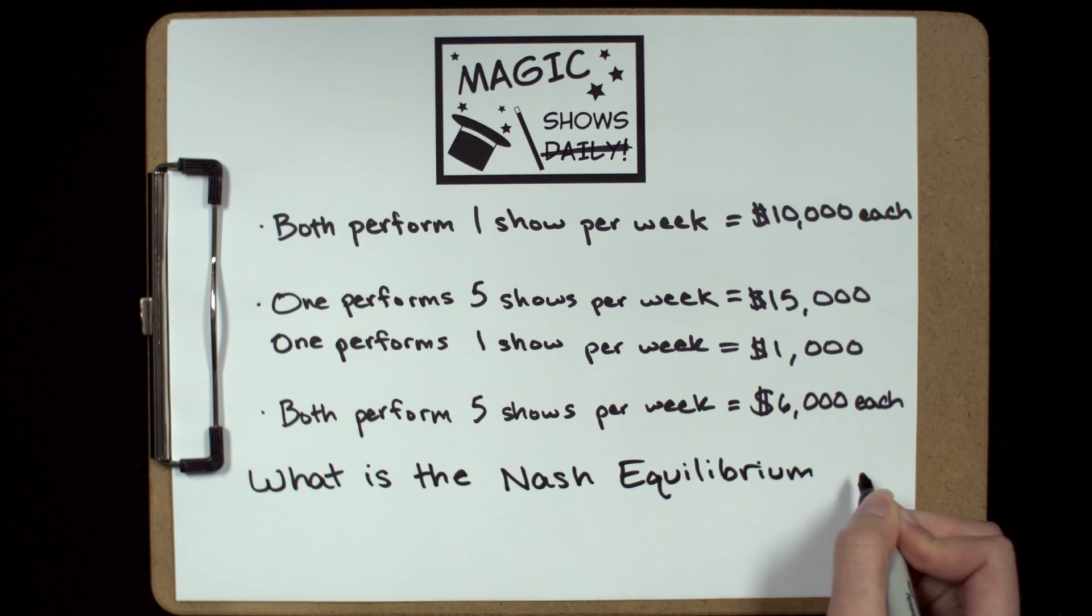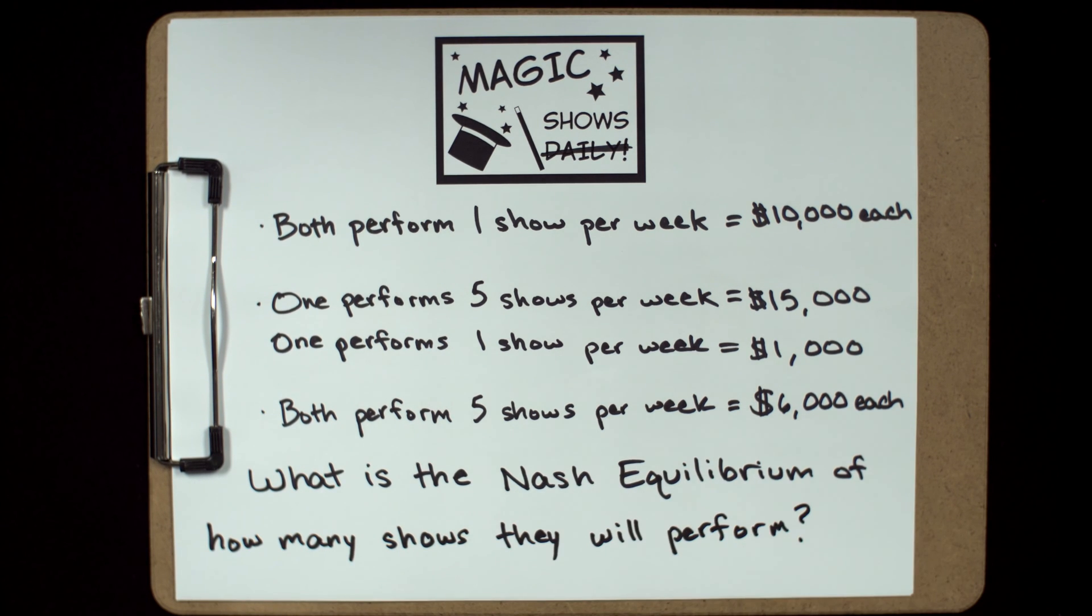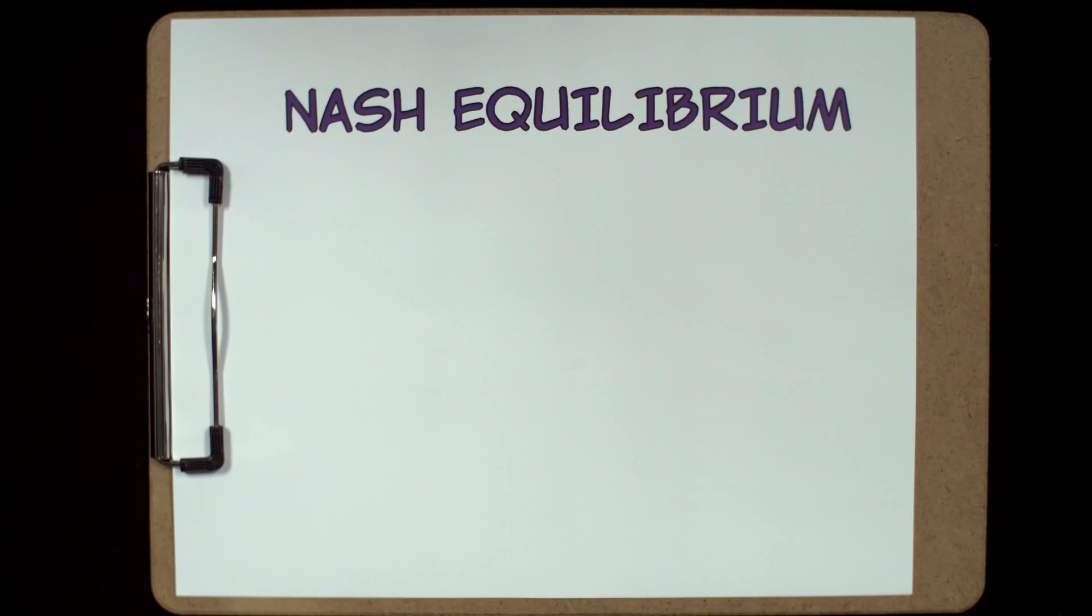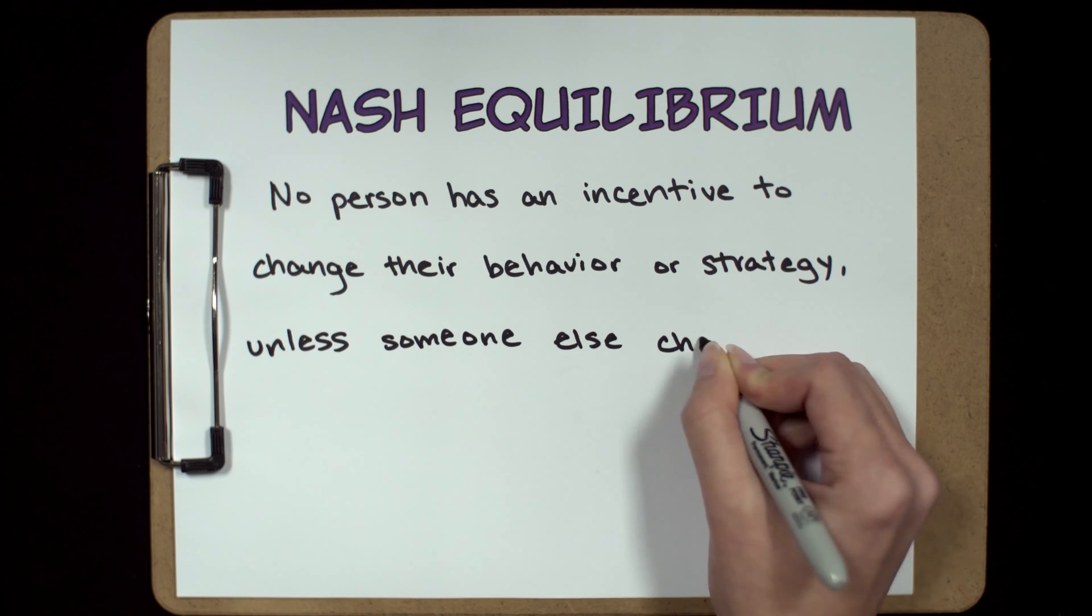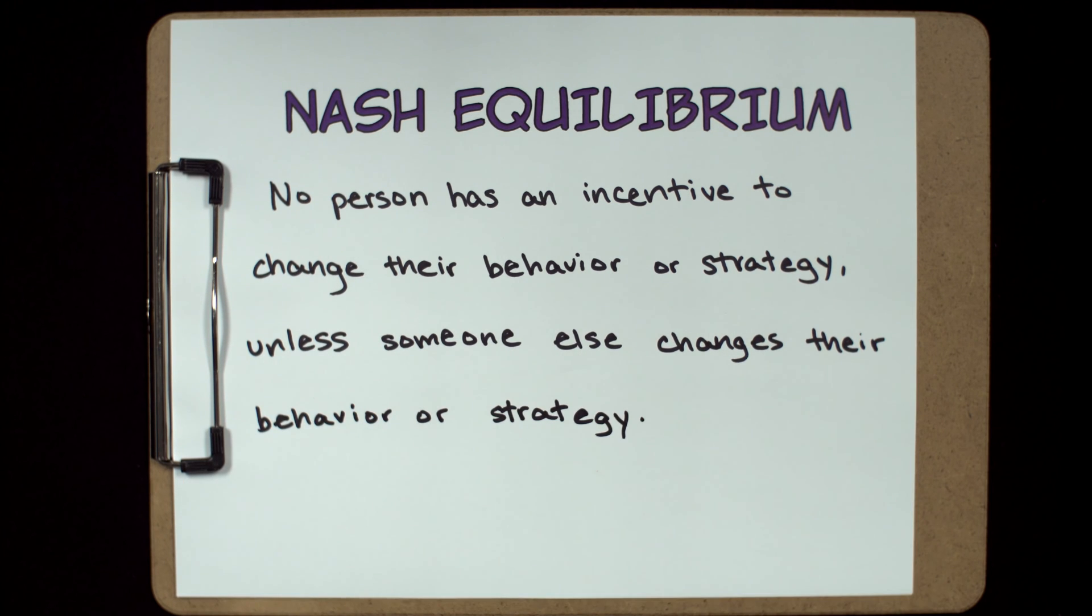So what is the Nash equilibrium of how many shows they will each perform? The Nash equilibrium means that no person has an incentive to change their behavior or strategy unless someone else changes their behavior or strategy.